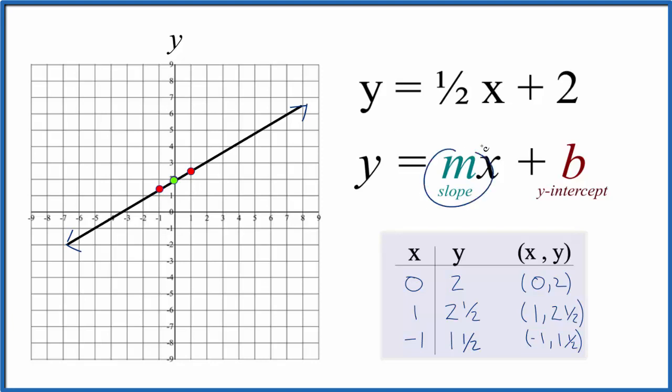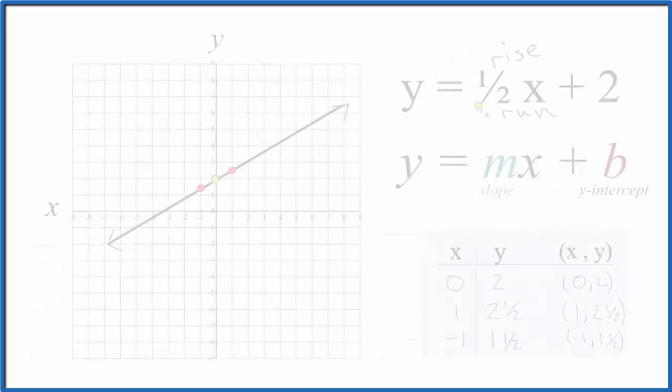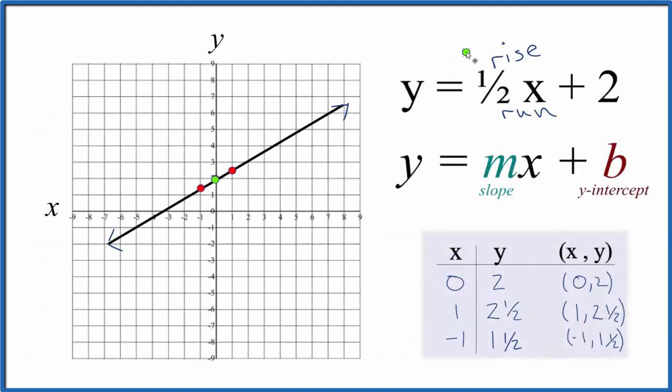Next, when we look at the slope here, we can think of it as rise over run. So we go up one and over two. That's our rise over run. So we go to the y-intercept. We go up one and over one, two. There's our point.